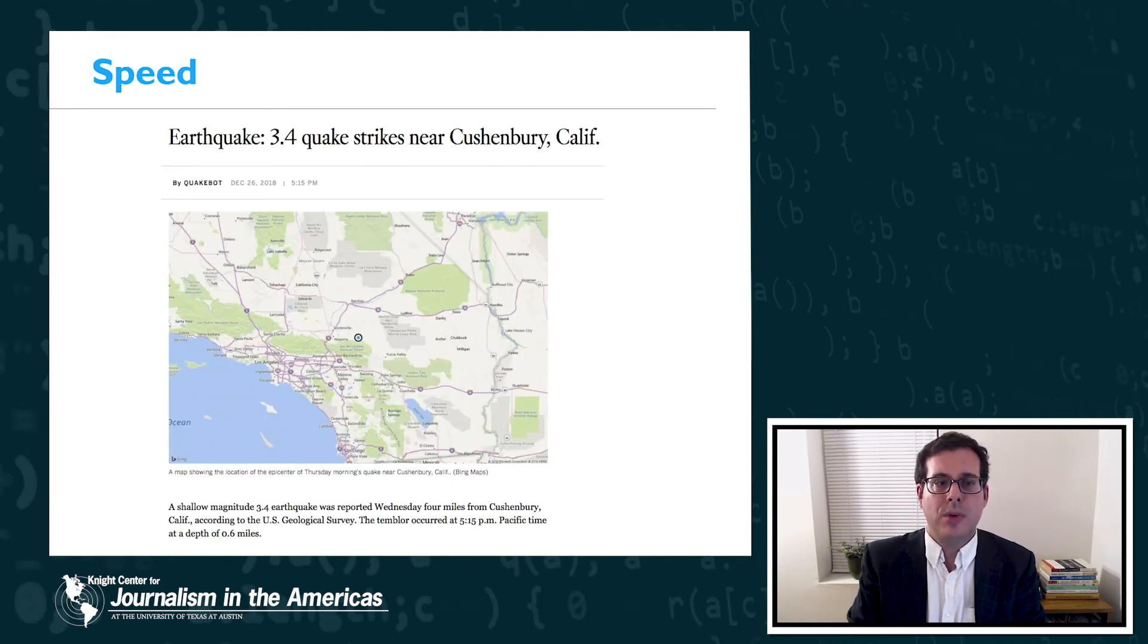In terms of speed I wanted to show you this example from the LA Times. The LA Times QuakeBot actually creates a story stub with a map within minutes after an earthquake of magnitude greater than 3.0 is reported by the U.S. Geological Survey. The speed advantage here is essentially for safety reasons since people may want to know as soon as possible if there's a quake near themselves or near a loved one.